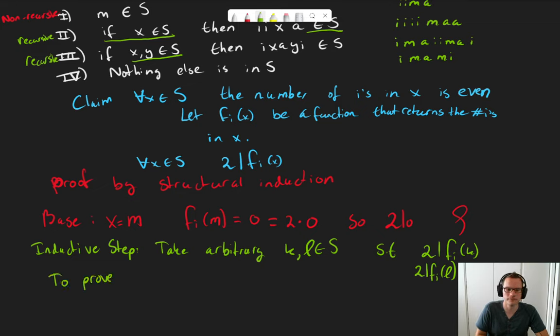Now, what do we need to prove? We need to prove that rule two works. Okay, so we need to prove that two divides the number of i's in iiKA. And we need to prove that two divides, rule three, the number of i's in iKALi. Now, before we do this formally, hopefully it is clear that this is true. After all, if the number of i's in K is even and I add two i's to it, clearly the result will also be even. It will be the next even number. Similarly here, if we have an even number of i's in K and an even number of i's in L, if I add them together, I have an even number. And then when I add two more, I should still have an even number.